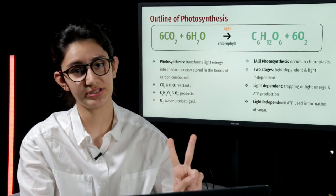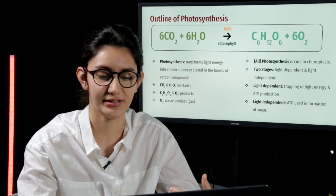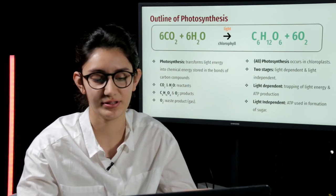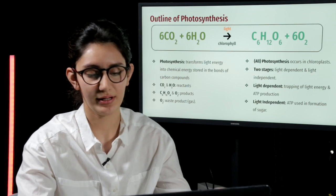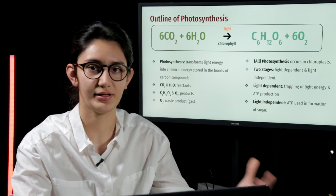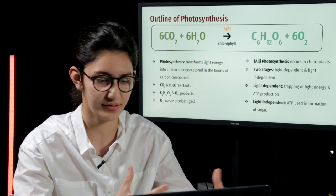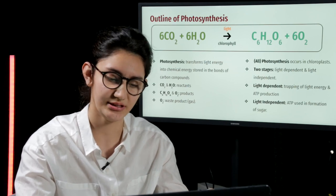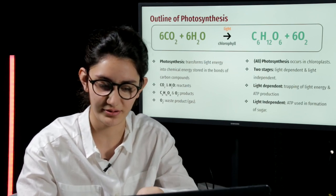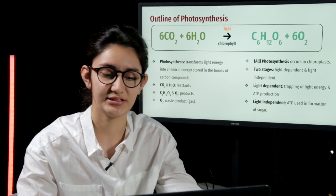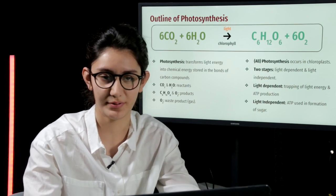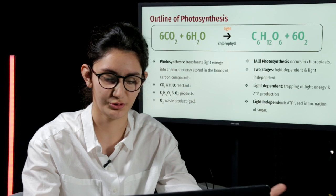All the processes of photosynthesis occur in chloroplasts because it requires chlorophyll. There are two stages of photosynthesis. The first one is light-dependent and the second one is light-independent. Light-dependent is where the light energy is trapped by the pigment and ATP is produced. Light-independent, on the other hand, is where the ATP that was produced in the light-dependent is used to produce sugar.